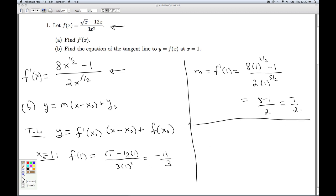So now I feed all this into my formula. y equals m, 7/2, x minus x naught, x minus 1, plus f of x naught, negative 11/3.